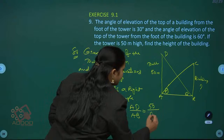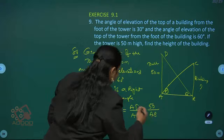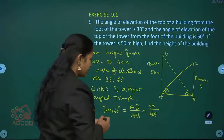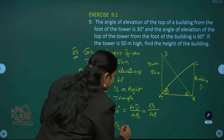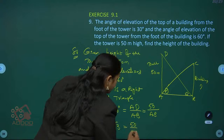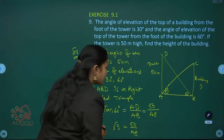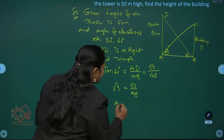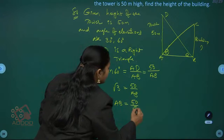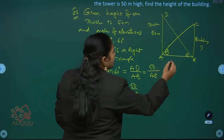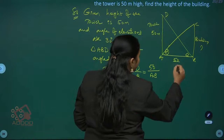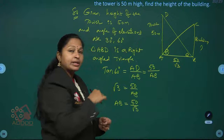AD is 50 meters and AB we take as AB. The value of tan 60 is root 3, so root 3 equals 50 divided by AB. Therefore AB equals 50 by root 3. So the length AB is 50 by root 3, meaning the distance between the building and the tower is 50 by root 3 meters.